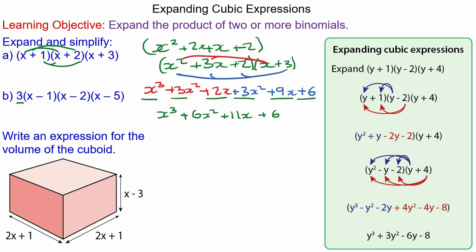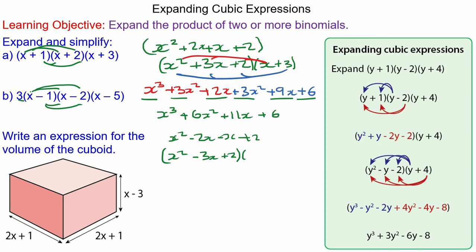We can do the same for question B. The quadratic we have is x squared minus 2x minus x plus 2, and this simplifies to make x squared minus 3x plus 2. We're going to multiply the quadratic by the third bracket (x minus 5), and then multiply by 3.